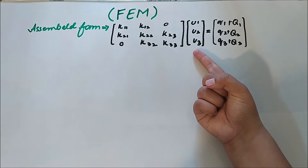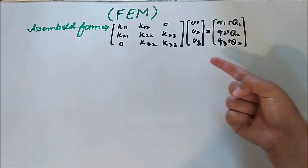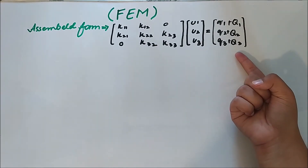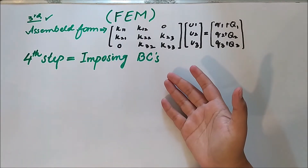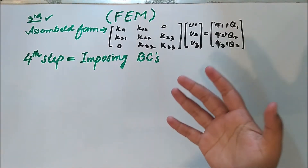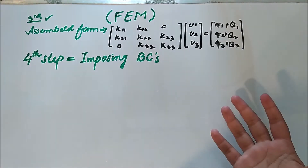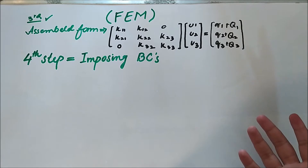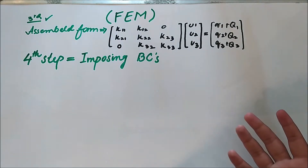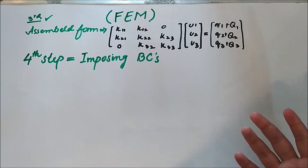So we have three matrices: the first is the stiffness matrix, the second is the displacement vector, and the third is the force vector — that is the combination of the discrete and continuous forces.